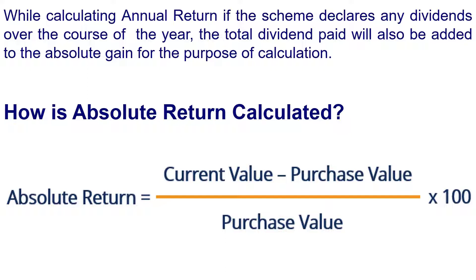Now, how is absolute return calculated? It is basically the difference between the current value and the original or purchase value, further divided by the original value, converted in percentage terms. We shall further be looking at an example for all three types of returns in this video.